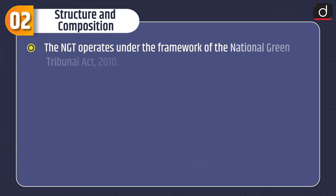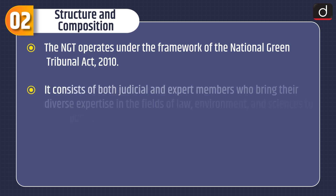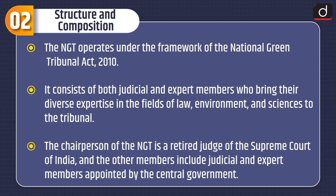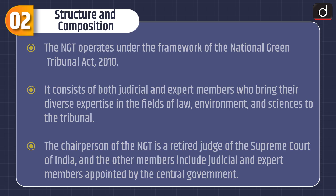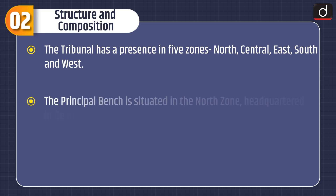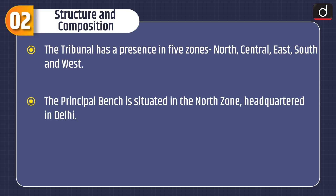Moving on to its structure and composition: the NGT operates under the framework of the National Green Tribunal Act 2010. It consists of both judicial and expert members who bring their diverse expertise in the fields of law, environment and sciences. The chairperson of the NGT is a retired judge of the Supreme Court of India, and the other members include judicial and expert members appointed by the central government. The tribunal has a presence in five zones — north, central, east, south and west. The principal bench is situated in the north zone, headquartered in Delhi.